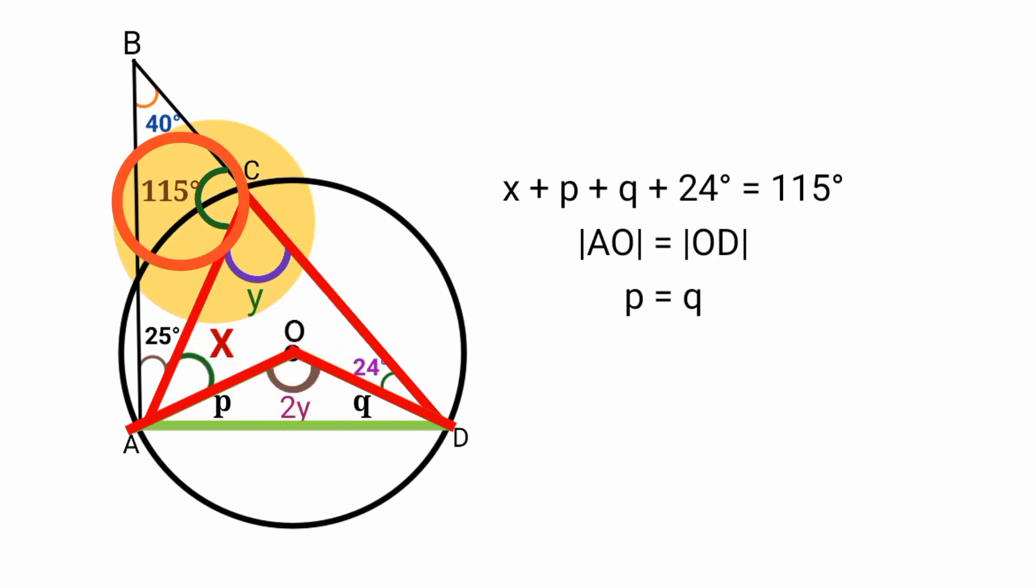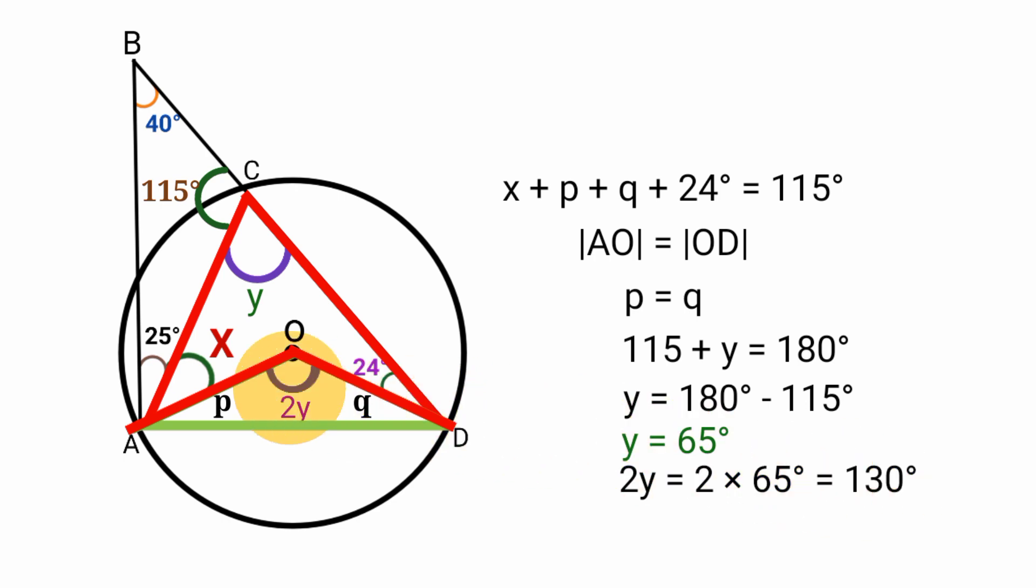Let's come back here. Since this angle here is 115 degree and is on the same straight line with angle Y, that means 115 plus Y is equal to 180 degree, because the sum of angles on a straight line is equal to 180 degree. So to find the value of Y now, we subtract 115 from both sides. So Y is now going to be equal to 180 degree minus 115 degree which is equal to 65 degree. Since the value of Y is equal to 65 degree and the size of this angle is equal to 2Y, this angle will be equal to 2 times 65 which is equal to 130.